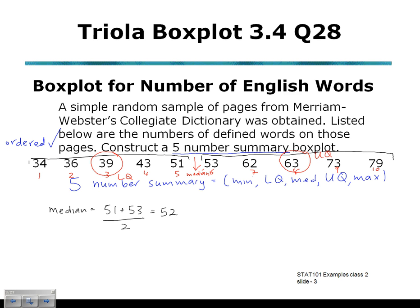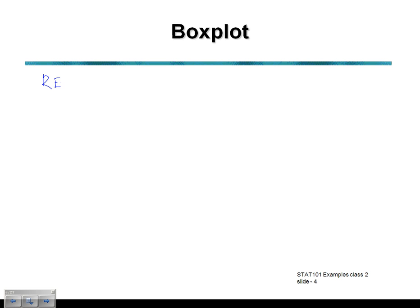So our 5-Number Summary: our minimum value, the smallest value in the data set, is 34. Our lower quartile is 39. Our median was 52. The upper quartile, 63. And the maximum value in the data set, 79. That's our 5-Number Summary. We can use this to draw our 5-Number Summary box plot, transferring those values across: smallest value 34, lower quartile 39, median 52, upper quartile 63, maximum value 79.